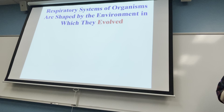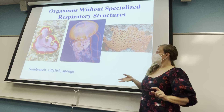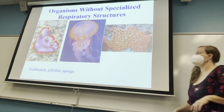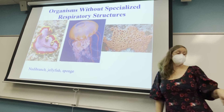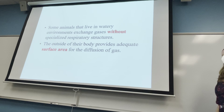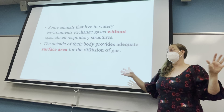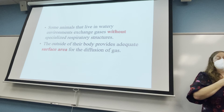We can tell a lot about an organism and where it evolved from by looking at its respiratory system. Some organisms are very simple — they don't even have a respiratory system but have respiratory structures. Their shape provides a lot of surface area so they can interact with the external environment, getting oxygen directly through their bodies.